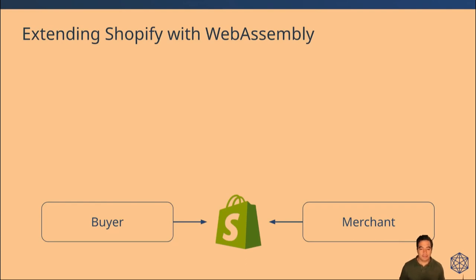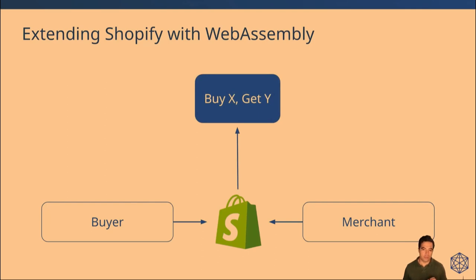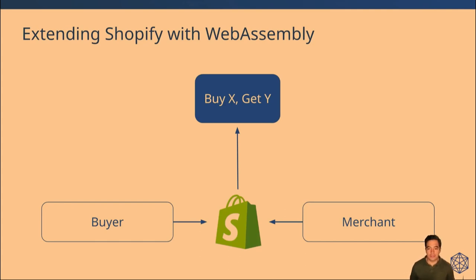Extensibility means enabling more complex interactions between a buyer and a merchant. Shopify has all the information to enable these complex interactions, but it wouldn't be scalable for Shopify to deal with all the combinations of how they could go. By complex interactions I mean, for example, calculating a discount — some are simple, but others can get complex, like giving a discount for a particular store or because a user has a particular tag. It's easier, more scalable, and more merchant-friendly to let them upload a function that writes this business logic on their own.